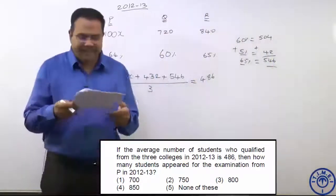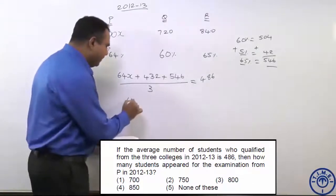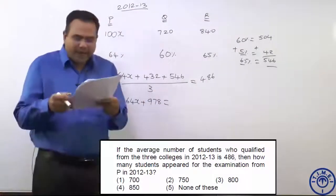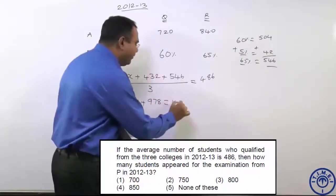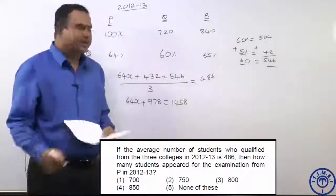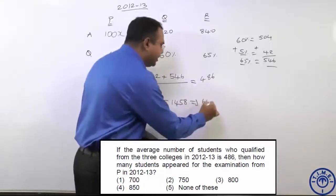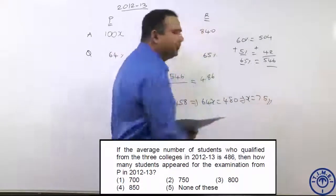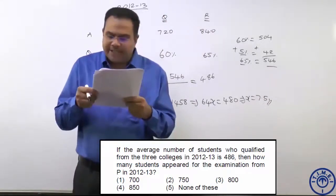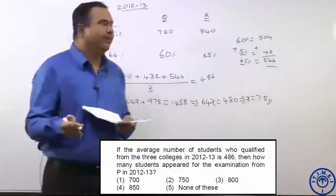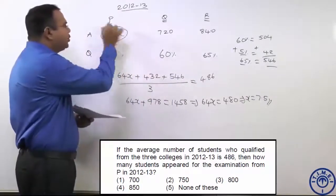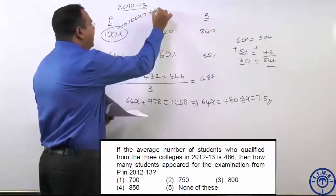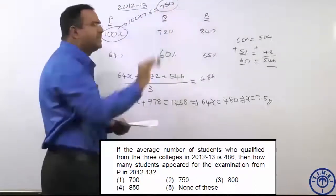On solving this, we get 64X plus — adding 432 and 546 — 978 equals 486 into 3, that is nothing but 1458. Solving further: 64X equals 480, so X equals 7.5. The question asks: how many students appeared for the exam from P in 2012-13? We took it as 100X. So 100 into 7.5 — the number of students appeared is 750.